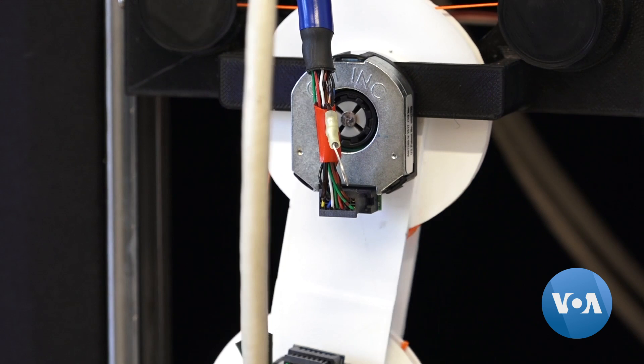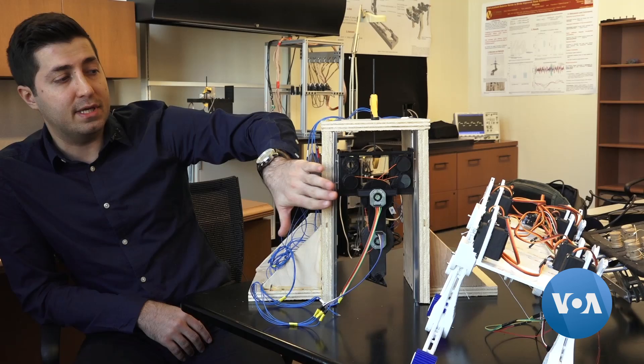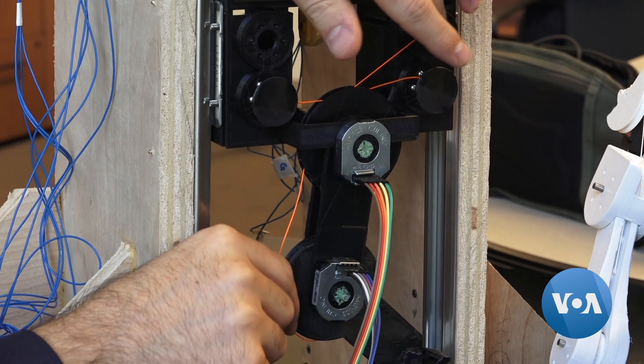While many robots are programmed to do a specific task, this robotic leg works differently. What's different here is that the robot is not trained to do anything in particular. It just knows how to learn.